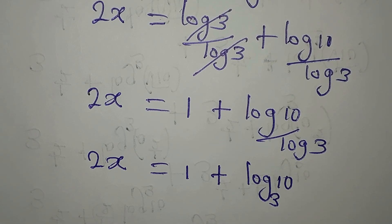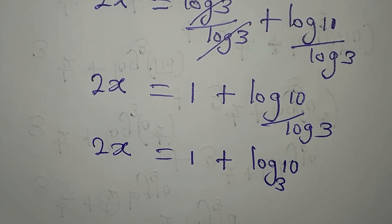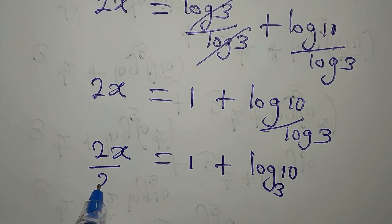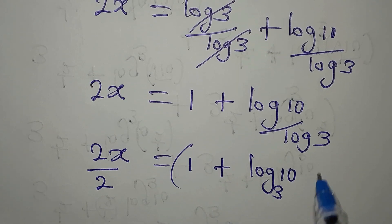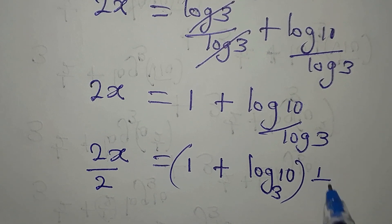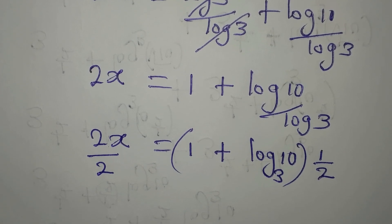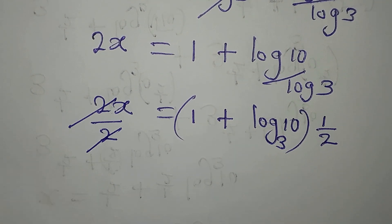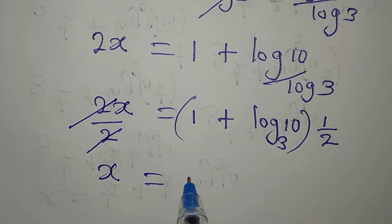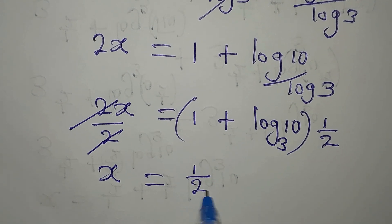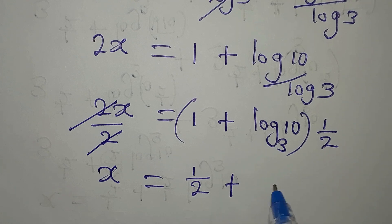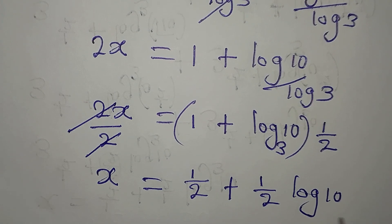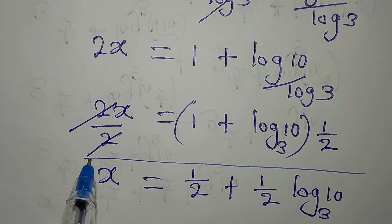Now the next step is to divide all through by 2. To divide by 2 is to multiply by one half. So x equals 1 times one half plus one half times log 10 to base 3, which gives us x equals one half plus one half log 10 to base 3. This right here is the value of x, but we want to verify to be sure.